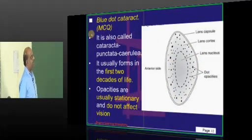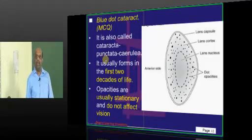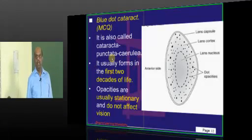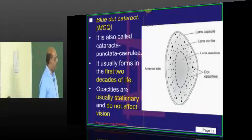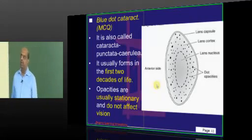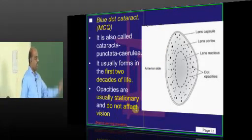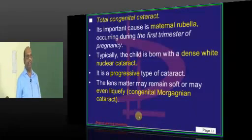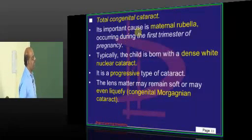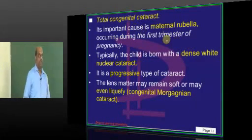Blue dot cataract is also called cataracta punctata cerulea. It typically occurs during the first two decades of life. It is usually stationary and does not affect vision.